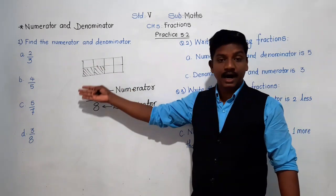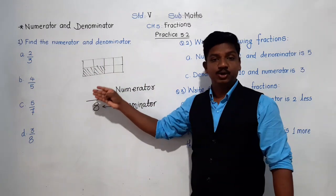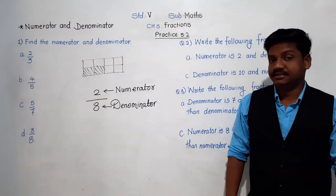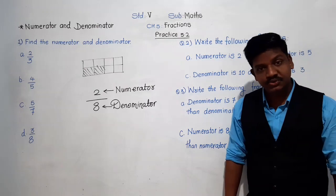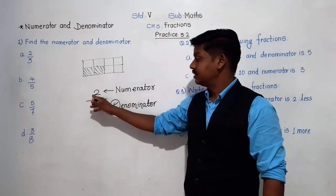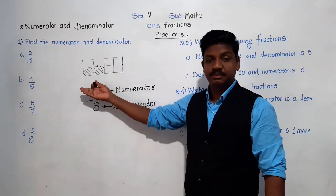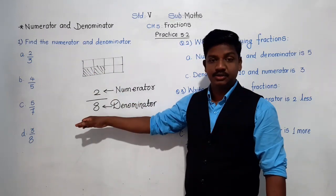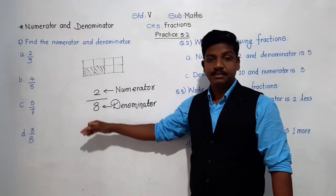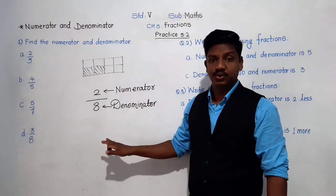So, the number above the bar is called the numerator, and the number below the bar is called the denominator. We have now given names to these two numbers: number above the bar is numerator, and number below the bar is denominator.